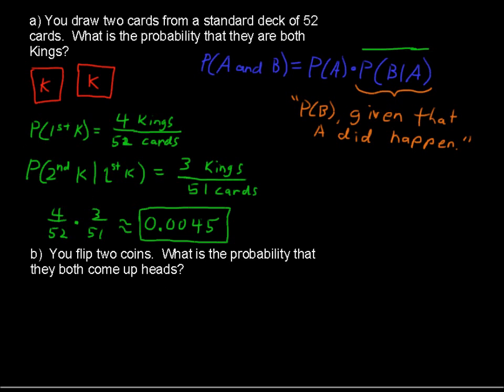In our second example, you flip two coins. What is the probability that they both come up heads? So what's going on here is the first coin is flipped, and we want it to come up heads, and the second coin is flipped, and it comes up heads.